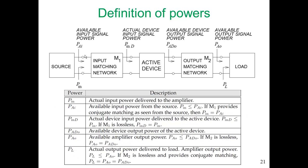Here is a more formal definition of the different types of powers — three input powers and three output powers. PIN is the actual power input to the amplifier: the power delivered by the source to the input matching network. That's not the same as the available power from the source, PAI. PIN is going to be less than or equal to PAI. If M1 provides conjugate matching to the active device, then PIN will equal PAI. If M1 is lossless, the power delivered to the actual device will equal the input power to the input matching network.